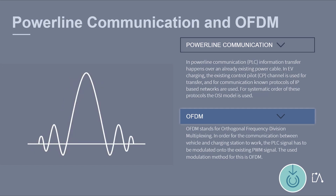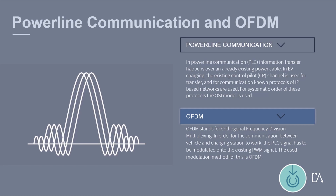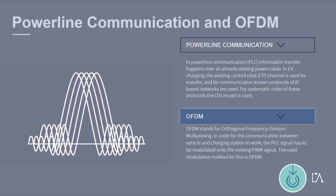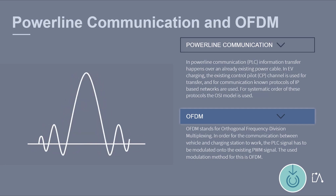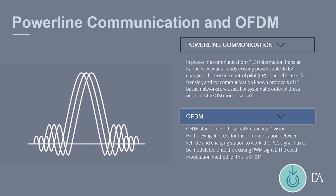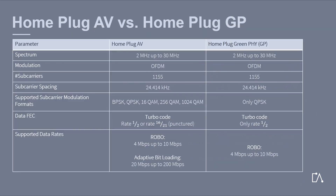In order for the communication between vehicle and charging station to work, the PLC signal has to be modulated onto the existing PWM signal. The modulation method used for this is OFDM. The communication standard HomePlug GreenPHY was completely derived from the standard HomePlug AV.